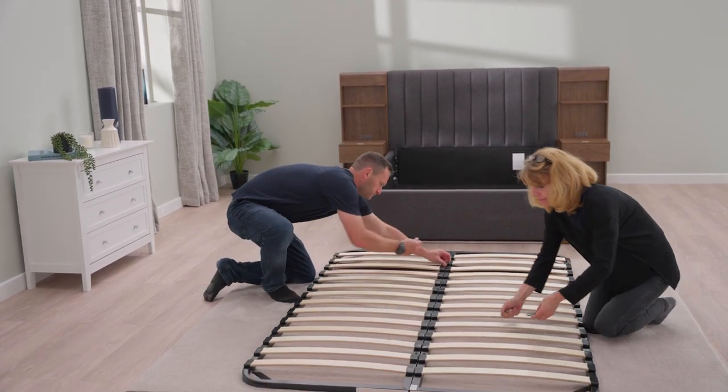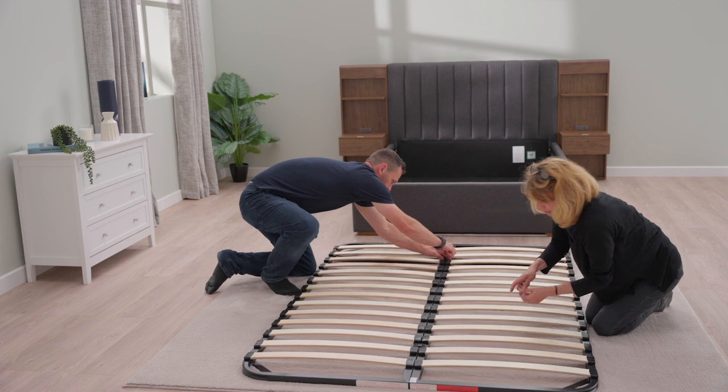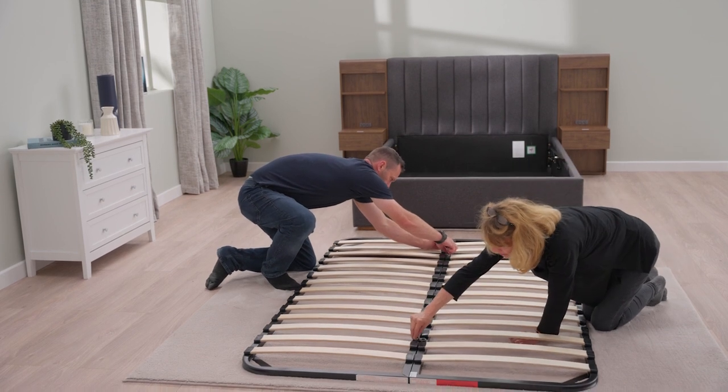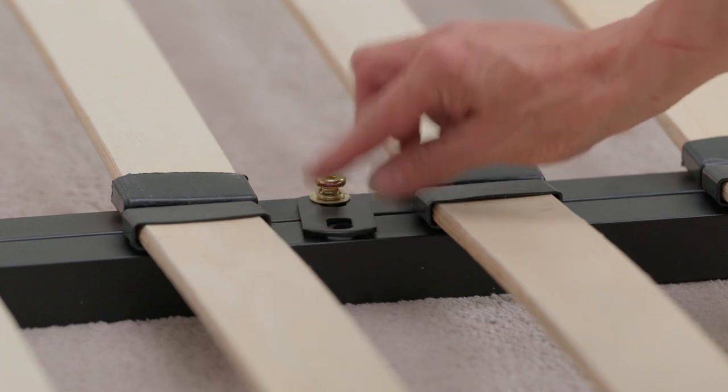The crossbar will now line up with the holes in the frame, which can be loosely fixed with bolts. The metal fixing plates can also now be attached to the frame.